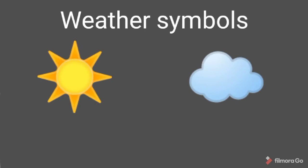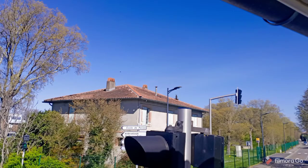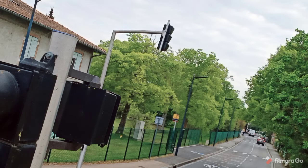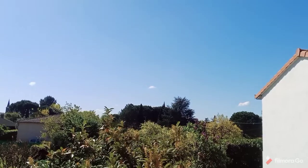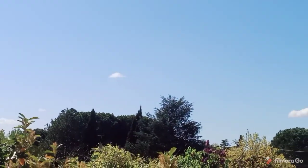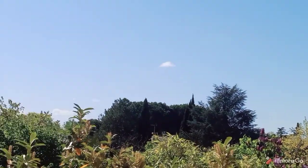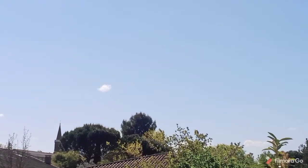These are called weather symbols. Are you thinking what is the weather? Weather is what we see and what we get outside daily in our place. We can tell the weather by looking at the sky. So, weather is what happens in the sky.